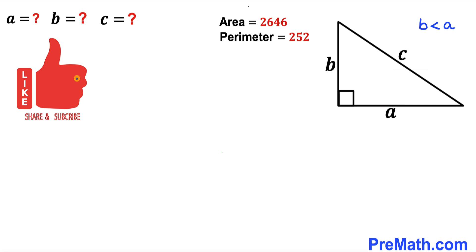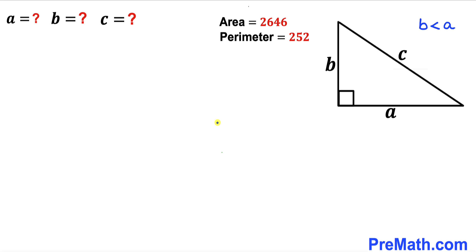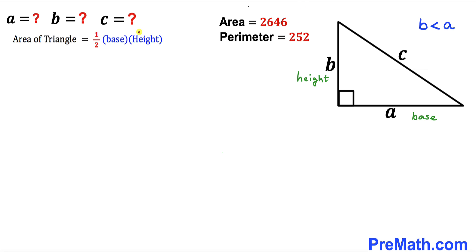Please don't forget to give a thumbs up and subscribe. Let's go ahead and get started with the solution. We know the area given to us is 2646, and now let's recall the area of a triangle formula.